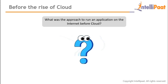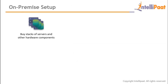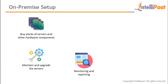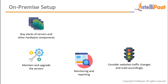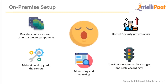Before the rise of cloud, how did companies run applications on the internet? First, they bought stacks of servers and hardware components. Second, they had to maintain and upgrade those servers, databases, and hardware according to their needs. Third, they had to continuously monitor and report to decide on upgrades. Finally, they had to consider application traffic for scaling and recruit top security professionals to handle unauthorized access and threats.